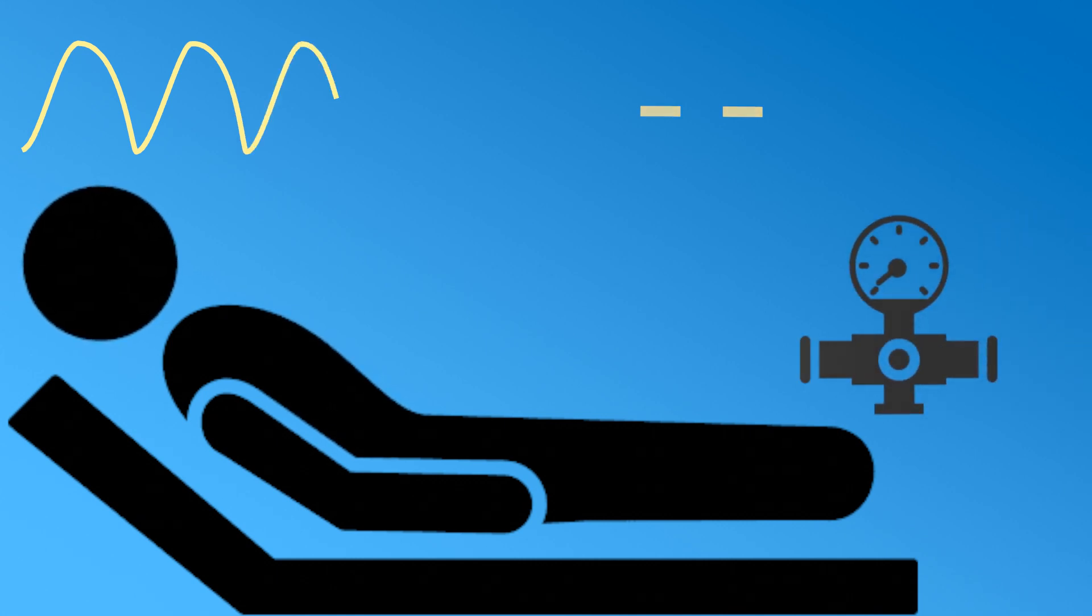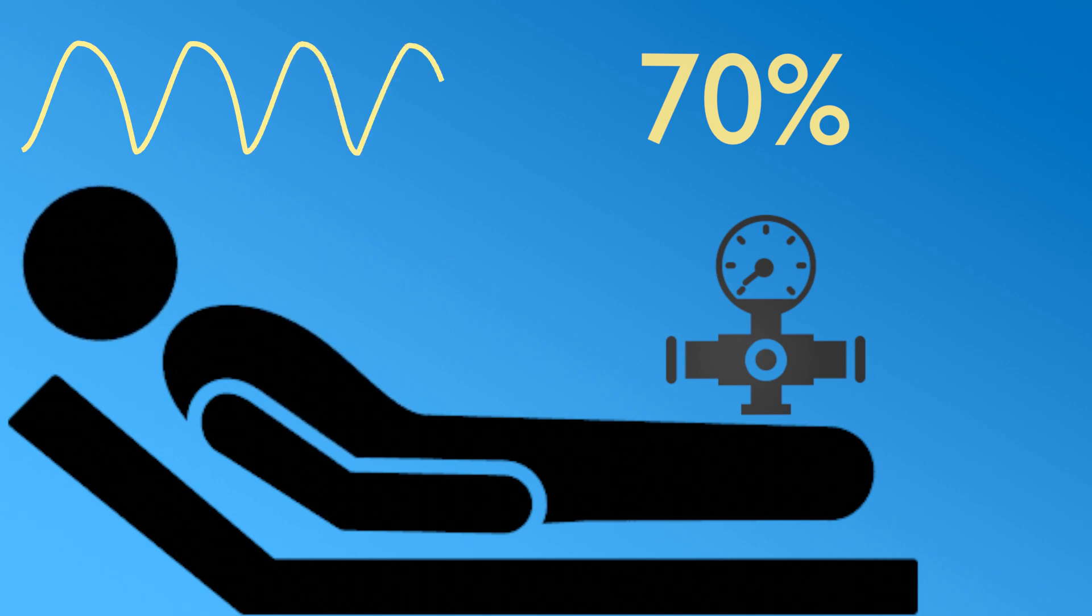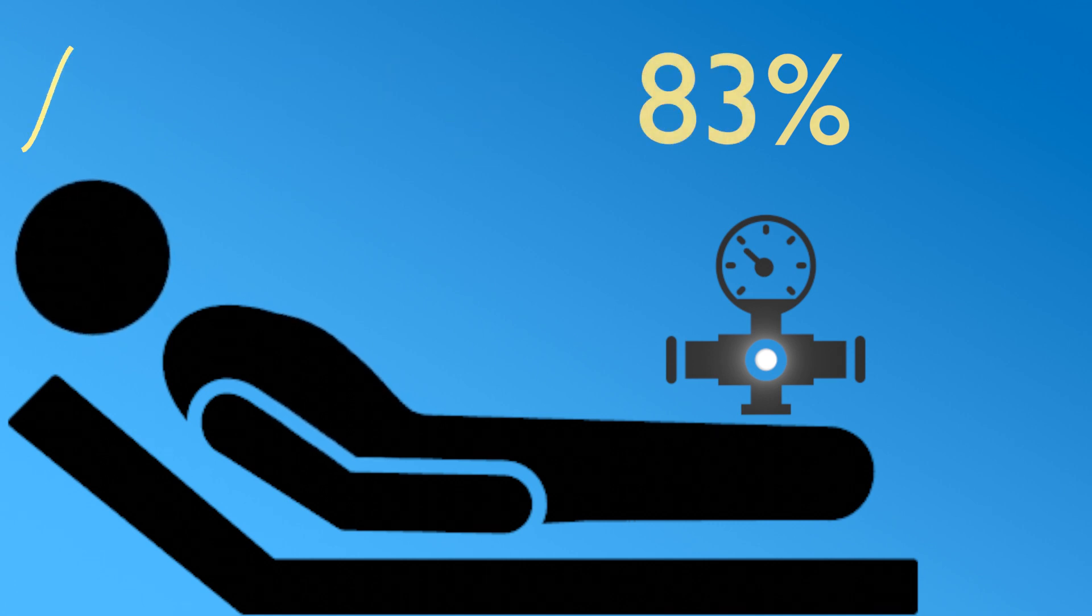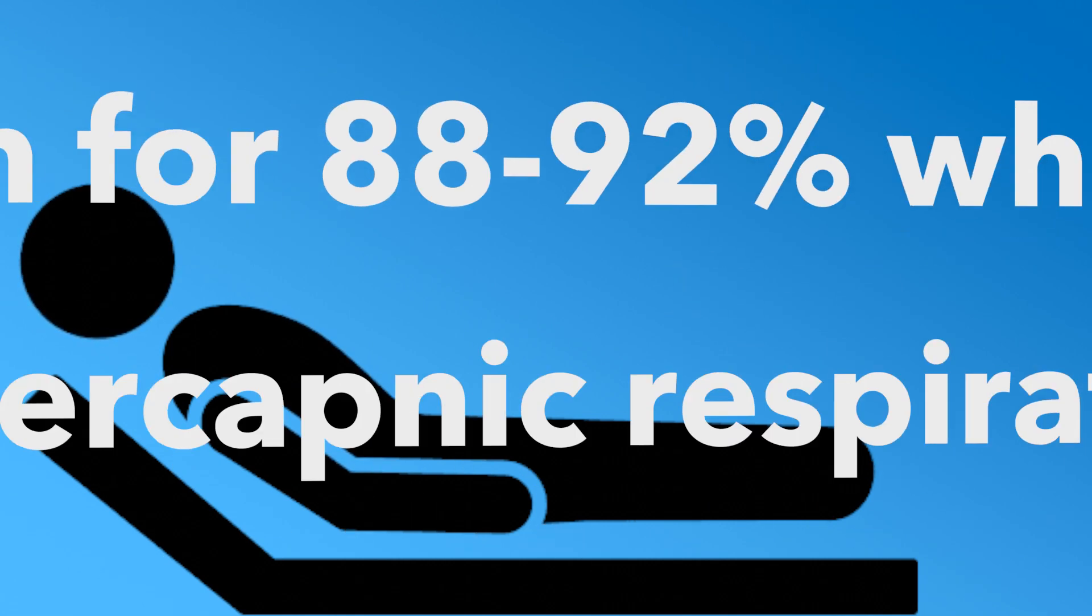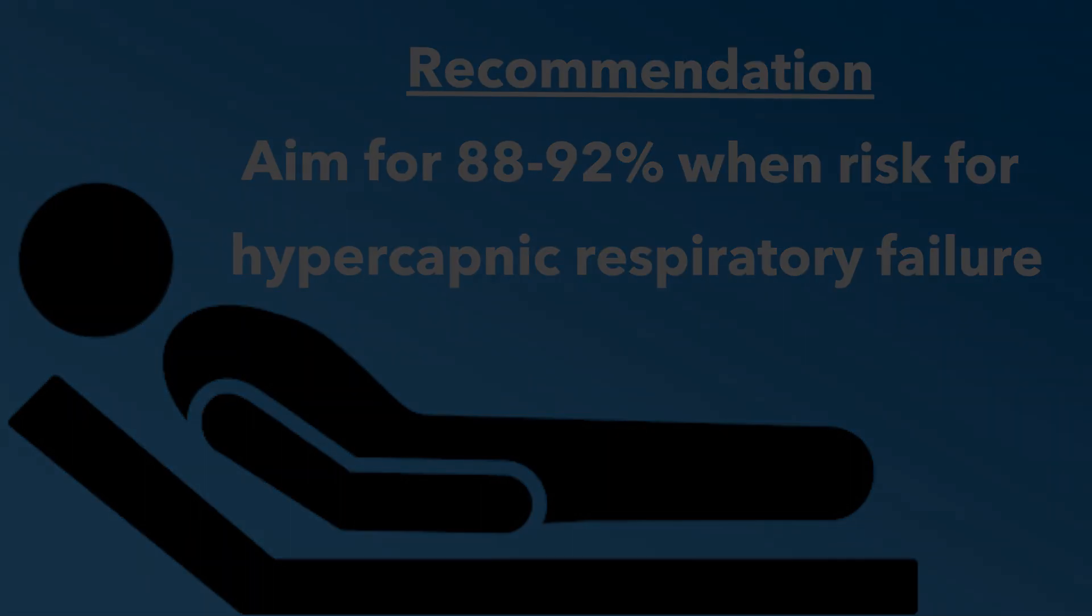And remember, hypoxia should be your primary concern in COPD. So never withhold oxygen from severely hypoxic patients for fear of causing hypercapnic respiratory failure. Instead, titrate the oxygen to target an oxygen saturation between 88 to 92 percent. Studies have shown this decreases mortality and minimizes respiratory acidosis.